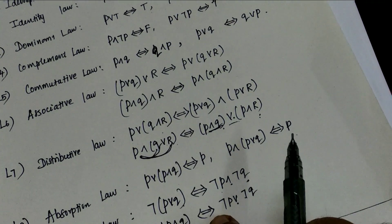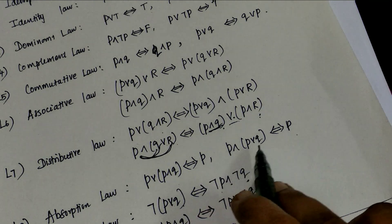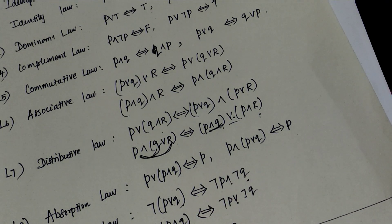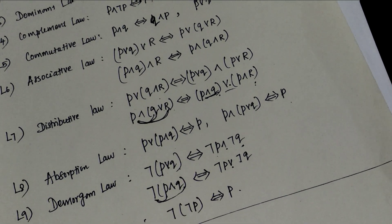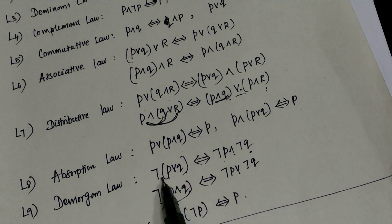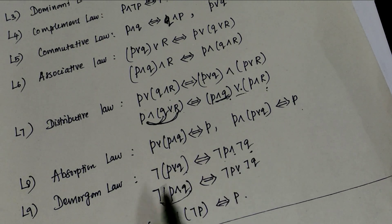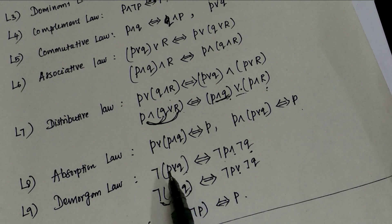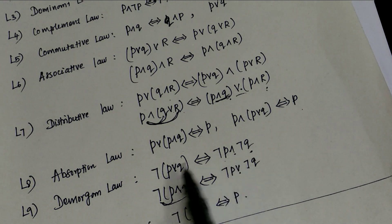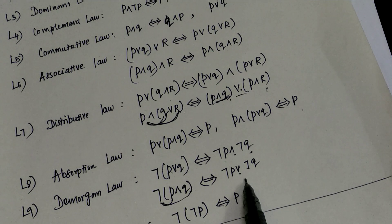Next is absorption law: P or (P and Q) is P, and P and (P or Q) is P. Next is De Morgan's law, which is the most important law. Negation of (P or Q) is negation P and negation Q. Negation of (P and Q) is negation P or negation Q. The negation symbol changes the OR operator to AND and AND operator to OR.